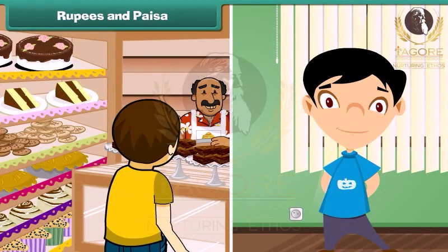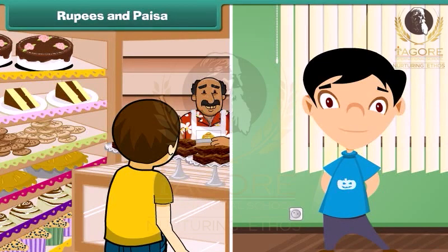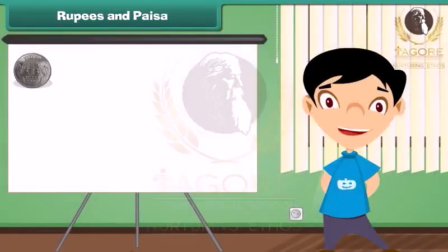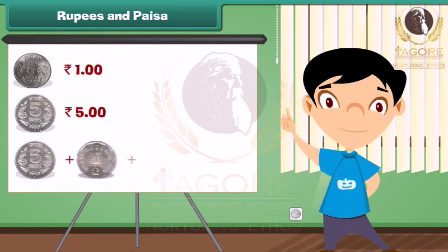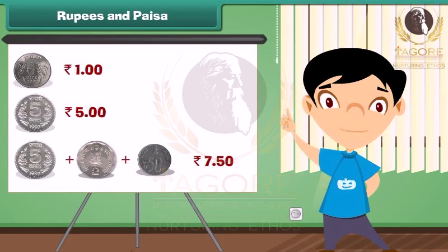When we go to market, sometimes the shopkeeper tells the amount in rupees and paise both. Let me show the correct way to write the price told by a shopkeeper. 1 rupee is written as Rupee 1. 5 rupees is written as Rupees 5. 7 rupees and 50 paise is written as Rupees 7.50.